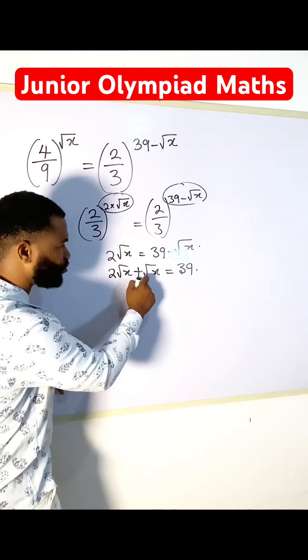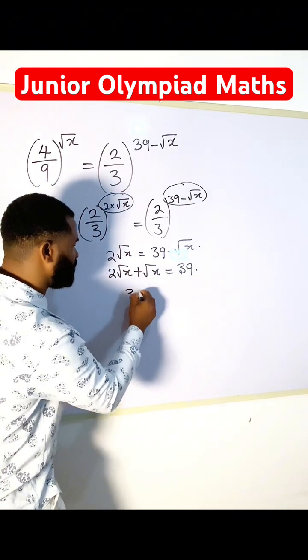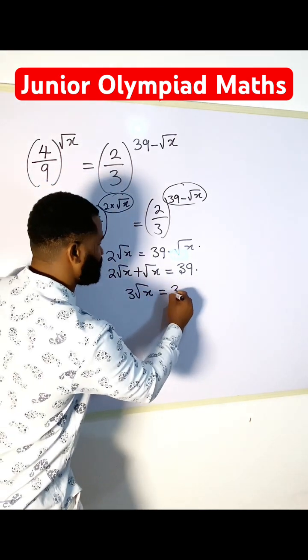2 root x plus 1 root x, I'm going to have 3 root x, and this is going to be equal to 39.